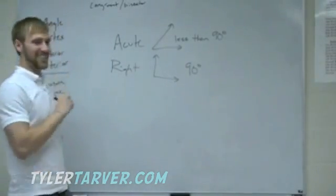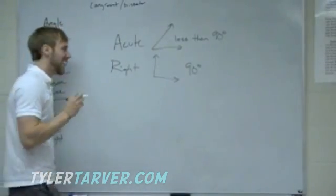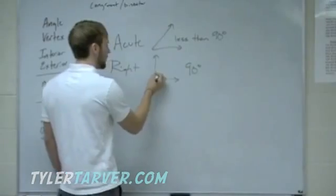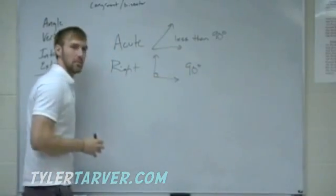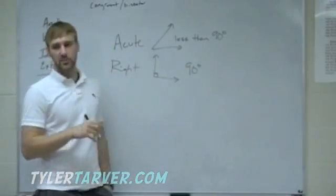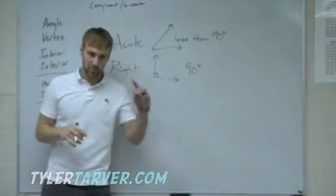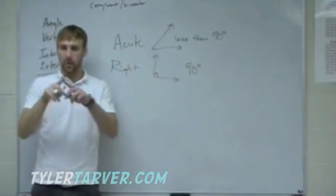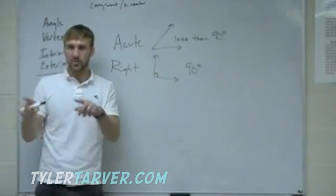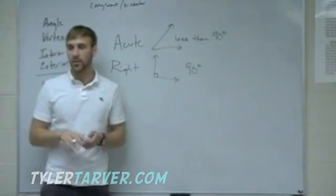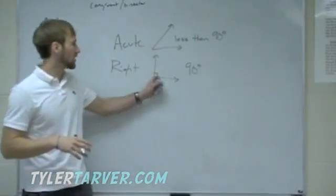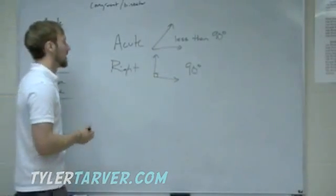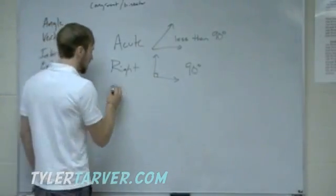We usually mark a right angle by putting a little box in the corner, because the corner of a piece of paper is a 90-degree angle. Boxes and perfect squares are all 90-degree angles, so we put a little square there to mark 90 degrees.